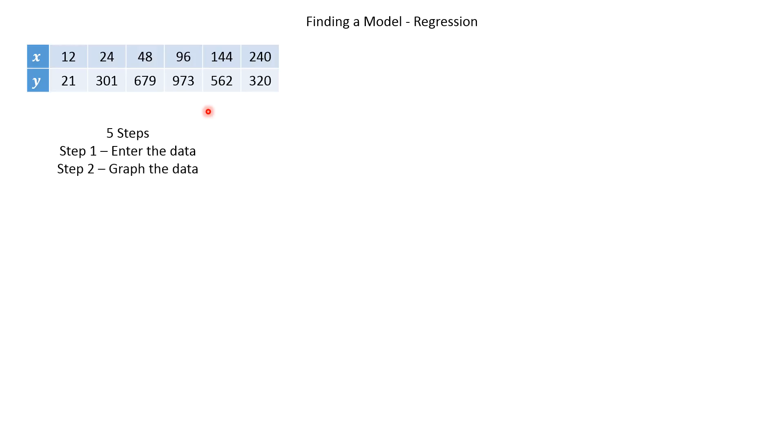And so let's look at our steps. Our five steps. We're going to enter the data. Graph the data. Do the regression, which involves choosing the regression. And check the graph. And then answer the question. This one, I didn't actually give you a question. So let's just find a polynomial model that represents this data. So step five, we would already have done.